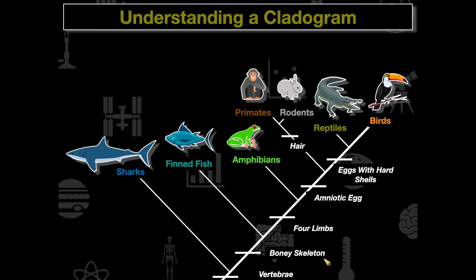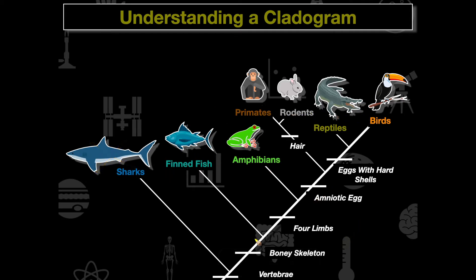Now, how many of these individuals are going to have bony skeletons? The rise of bony skeletons occurs further up the cladogram, so finned fish, amphibians, primates, rodents, reptiles, and birds all have it, but sharks do not. Bony skeletons evolved after sharks diverged — sharks' main structure is cartilage, not bone.